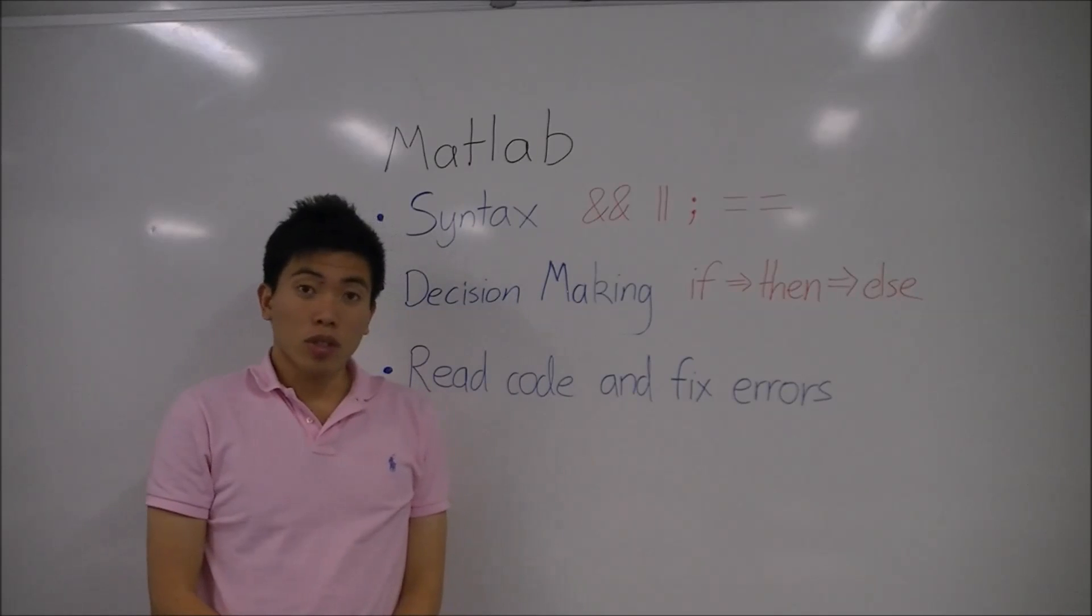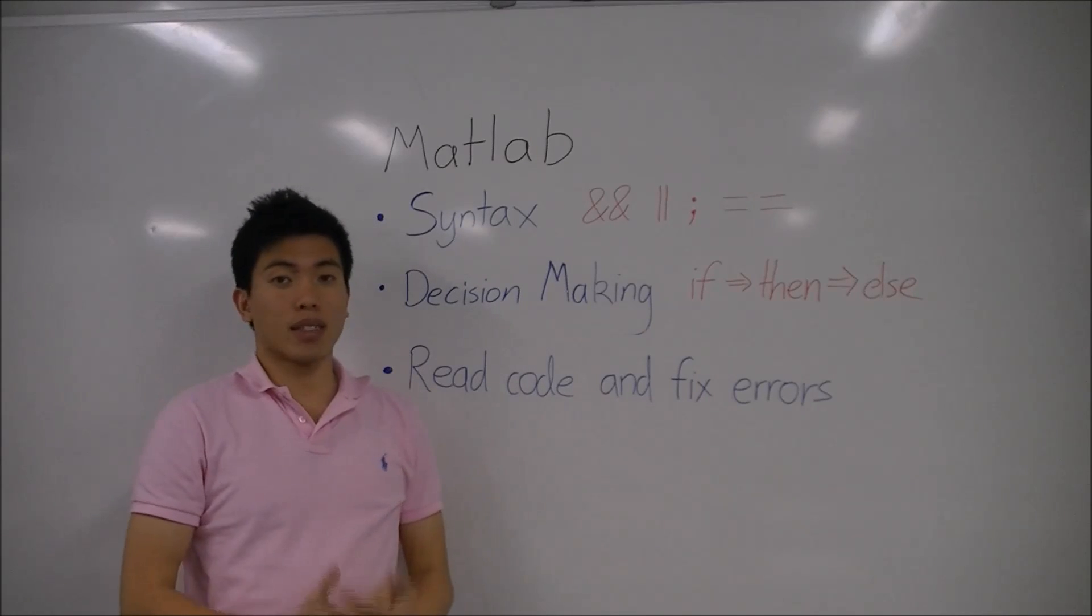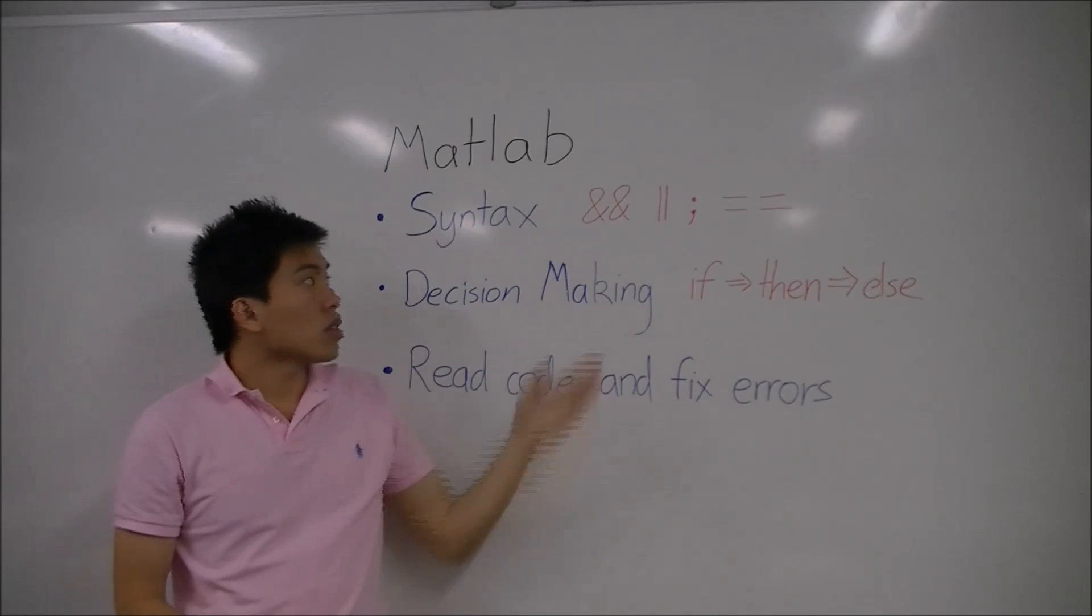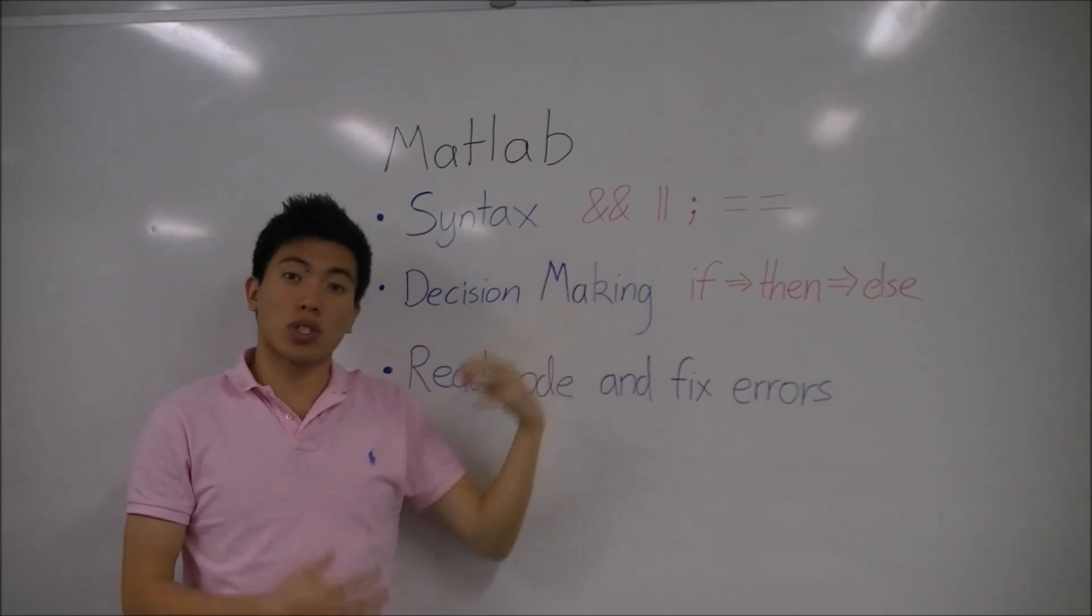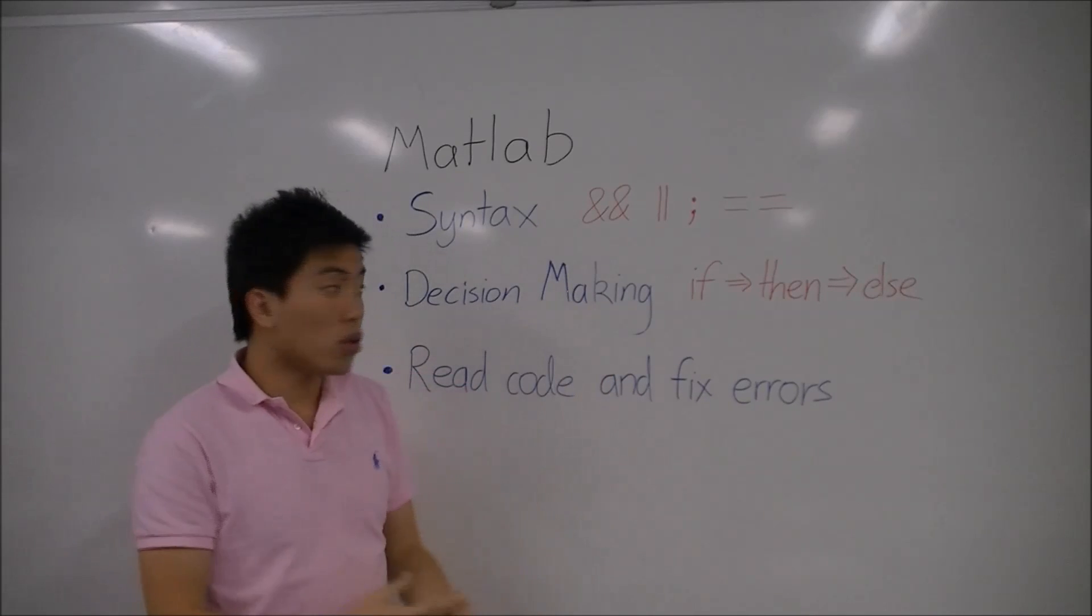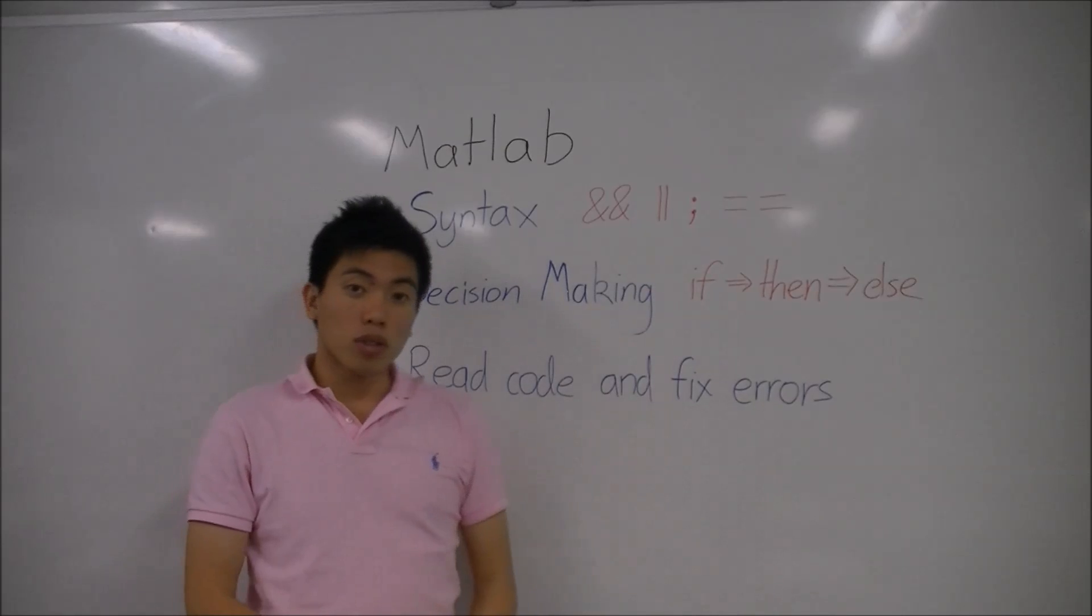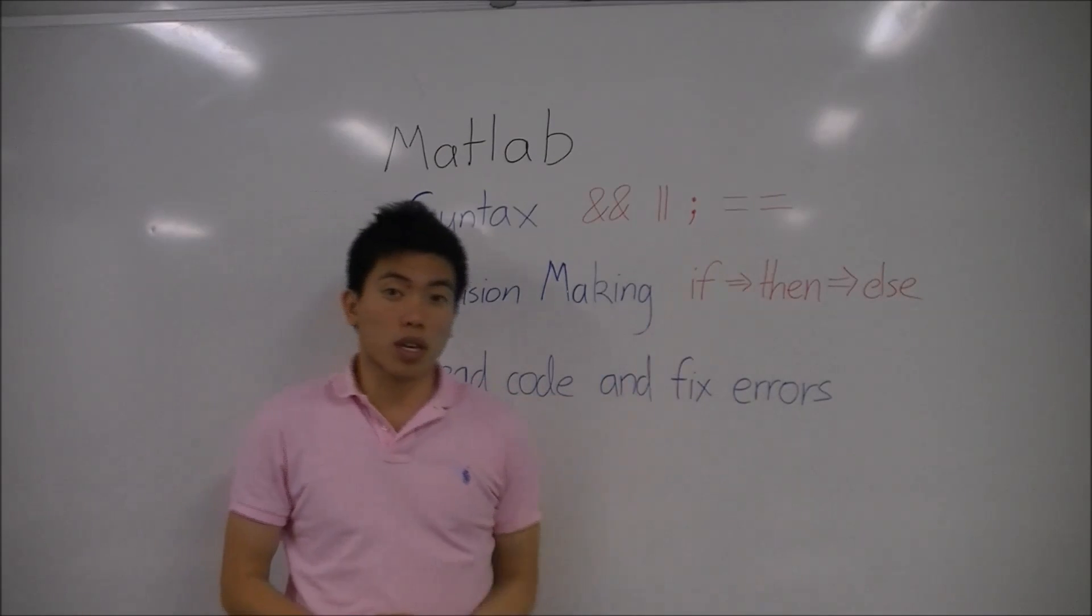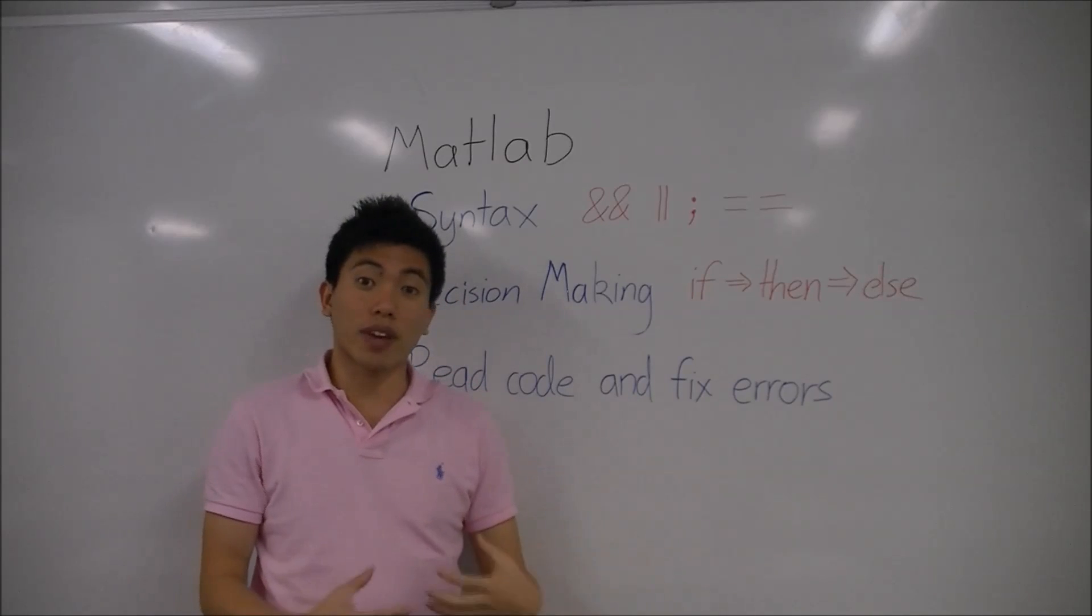For the MATLAB section, we're looking at if you understand basic syntax of coding languages. As an example, we've got two ampersands here, which stands for AND. The double vertical lines means OR. You've got semicolons, which is used at the end of lines of code. And you've got double equal signs, which is used to compare variables to things.